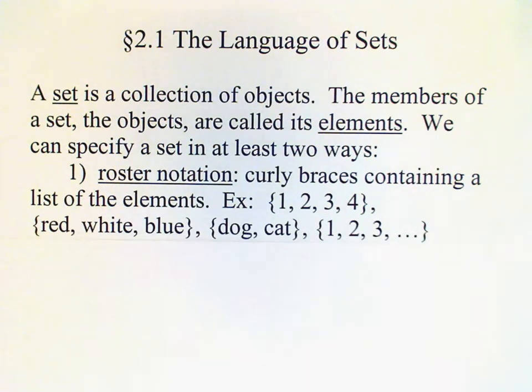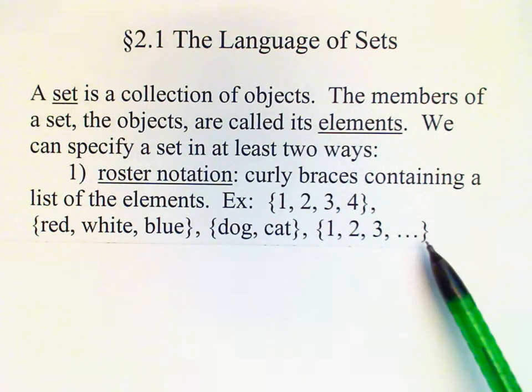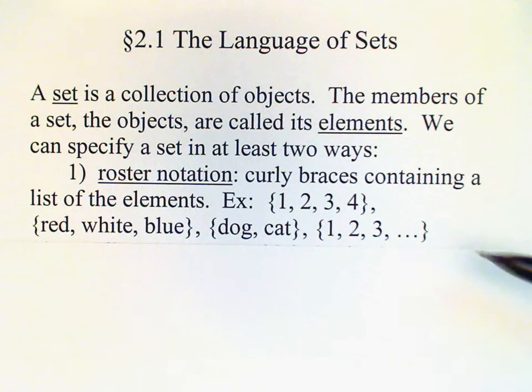Some other examples of sets in roster notation. The three colors, red, white, and blue. Two popular pets, dog and cat. And a list of all the counting numbers, starting with one and continuing on indefinitely. Of course we cannot write an indefinite number of elements. And so what we do in a case like this is to write a few elements until a pattern is established, and then we write three dots to indicate the pattern continues.